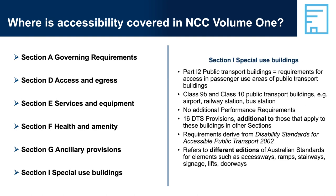Section I, Special Use Buildings, contains 16 additional DTS provisions that apply only to Class 9B or Class 10 public transport buildings. The provisions within Part I2, Public Transport Buildings, derive from the Disability Standards for Accessible Public Transport 2002, a national disability standard agreed to by Australian governments. The design specifications in those standards are sometimes different to those that generally apply within the NCC. As a result, Part I2 sometimes refers to different editions of Australian standards for accessways, ramps, stairways, signage, lifts and doorways. If there is a difference between a provision in Part I2 and a related provision in another section of the NCC, then the provision within Part I2 takes precedence.